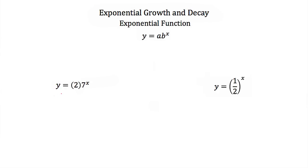We're given the example y is equal to 2 times 7 to the x. Notice x, our variable, is in the exponent of 7, so this is an exponential function. We're given a second example: y is equal to 1/2 to the x. Again, x is our variable and it's in the exponent of 1/2, so this is also an exponential function.